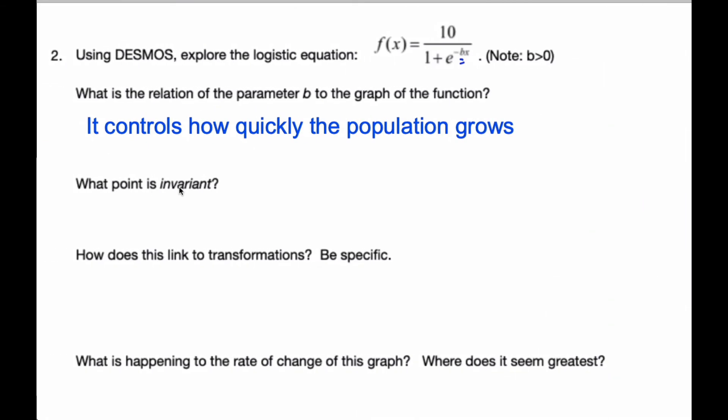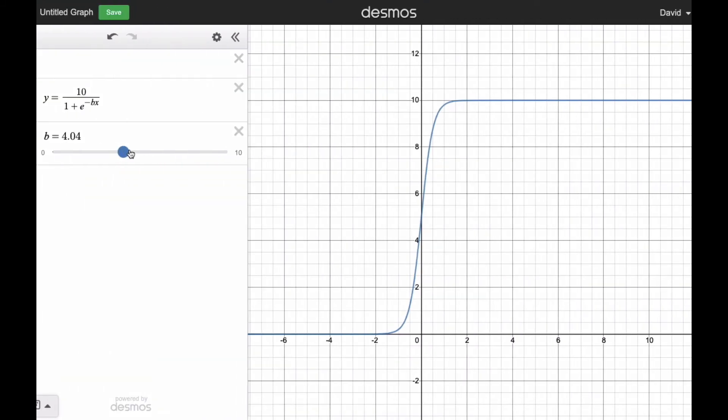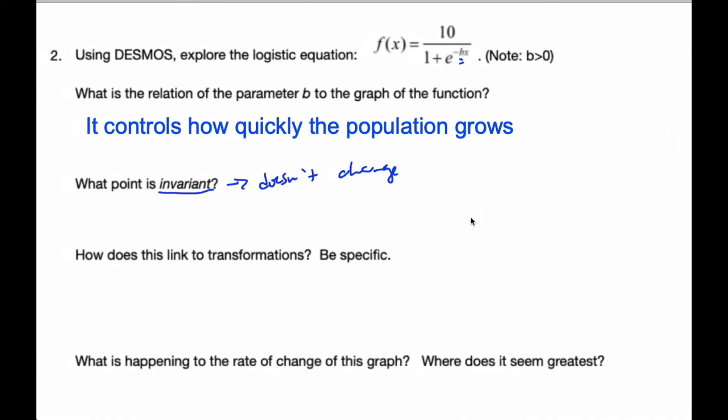What point is invariant? Well, invariant means it does not change. It's a point that stays constant throughout. And if I change B, you'll notice the point that stays constant throughout is the y-intercept here. It's invariant. So the y-intercept is invariant.